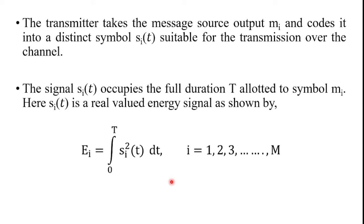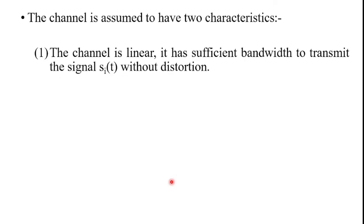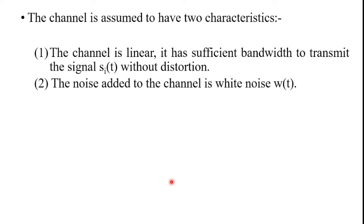In the block diagram, the channel is assumed to have two characteristics. First, the channel is linear and has sufficient bandwidth to transmit the signal si(t) without distortion. Second, the noise added to the channel is white noise — specifically, additive white Gaussian noise (AWGN).